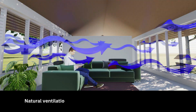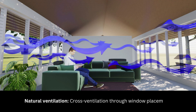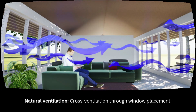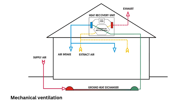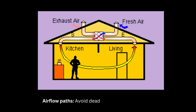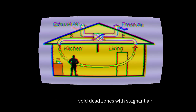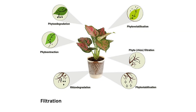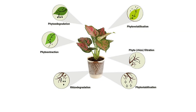Natural ventilation: cross ventilation through window placement. Mechanical ventilation: heat recovery ventilators for energy efficient fresh air supply. Airflow paths: avoid dead zones with stagnant air. Filtration: minimize indoor pollutants and allergens.